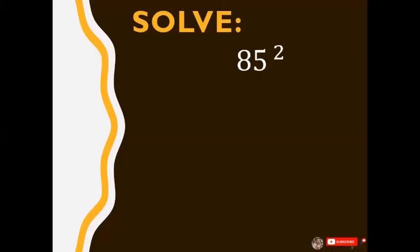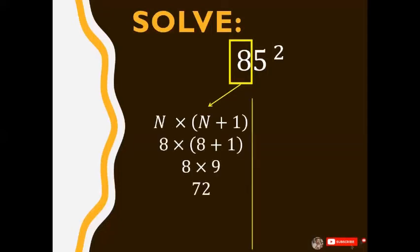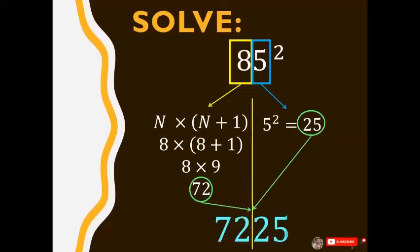Another, last one. Solve 85 squared in 5 seconds. And that's, we have 72 and 25, which makes 7225.